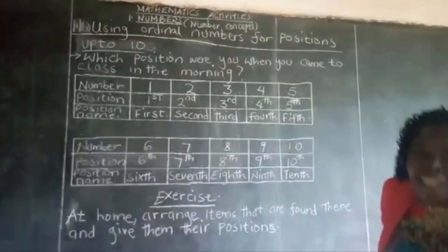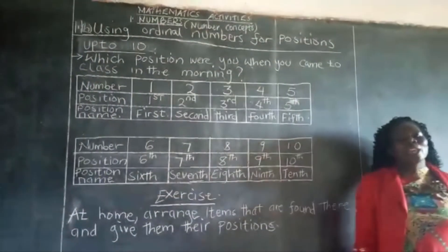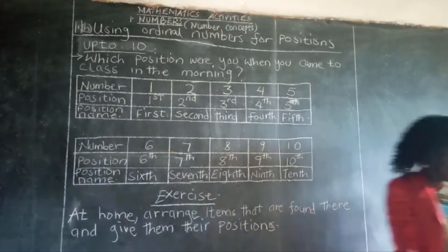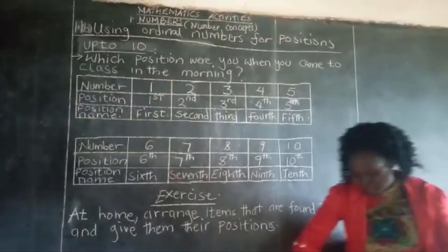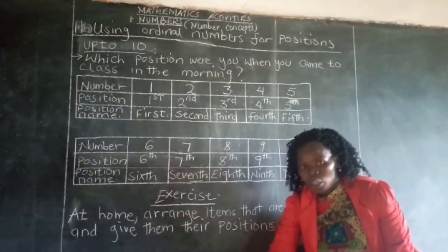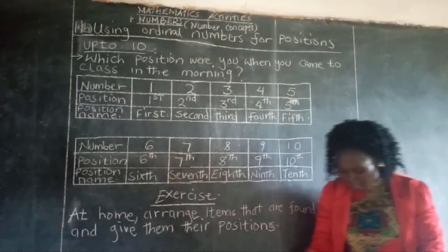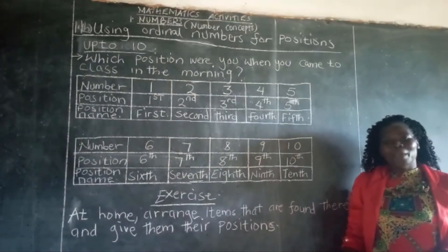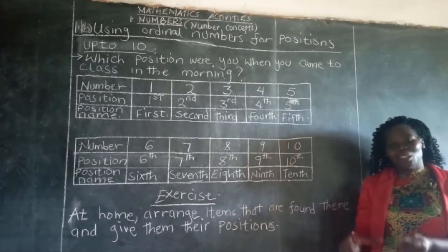Now learners, I have some items here and we want to give the position name to the items that we have. So these are the items that we have. This one is a pair of scissors and the pair of scissors is in the first position.